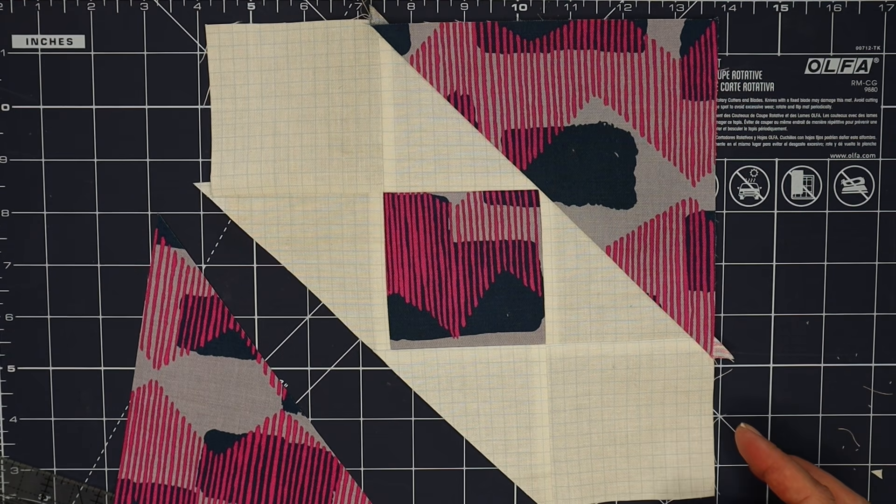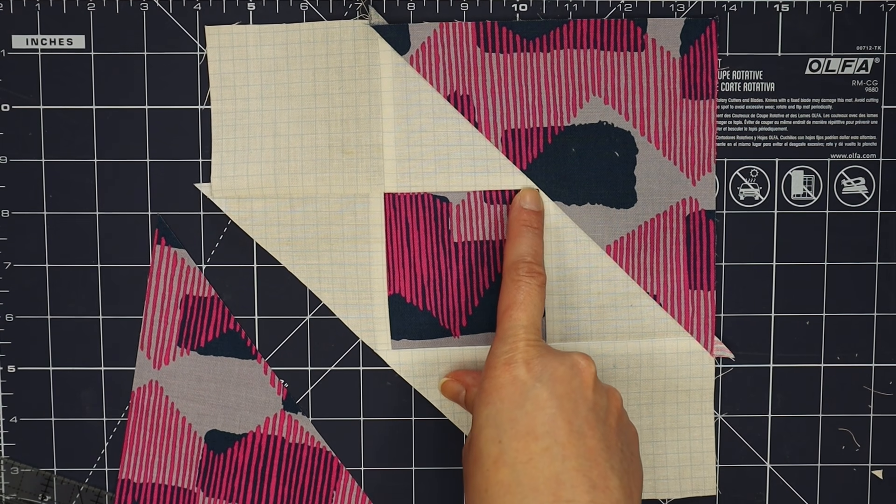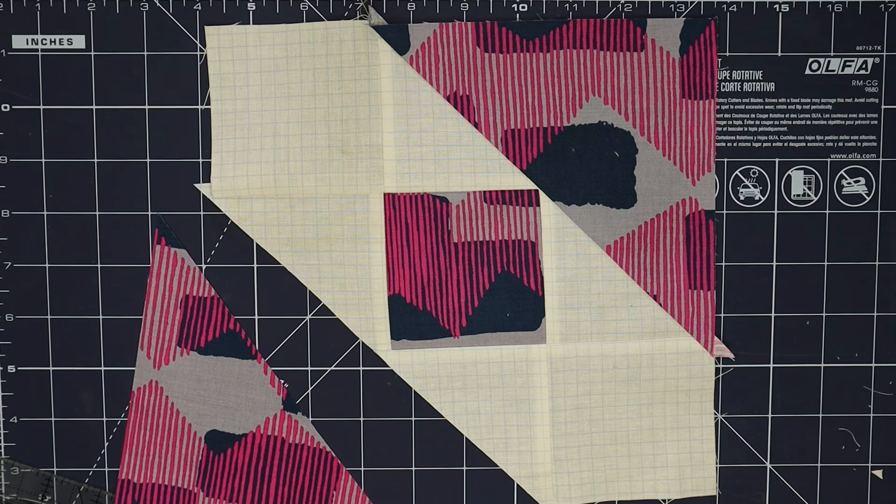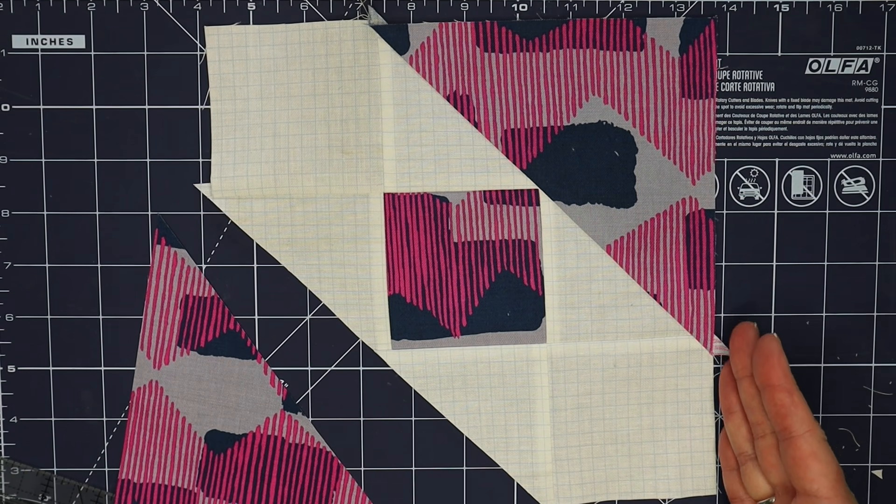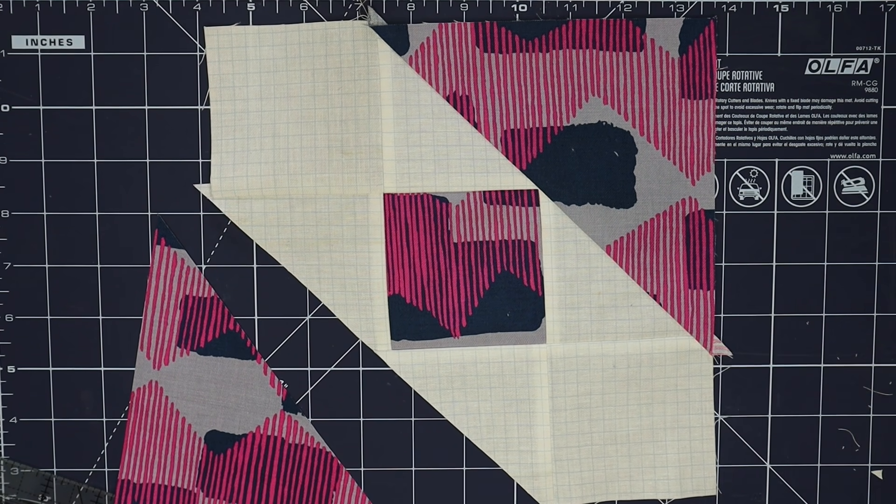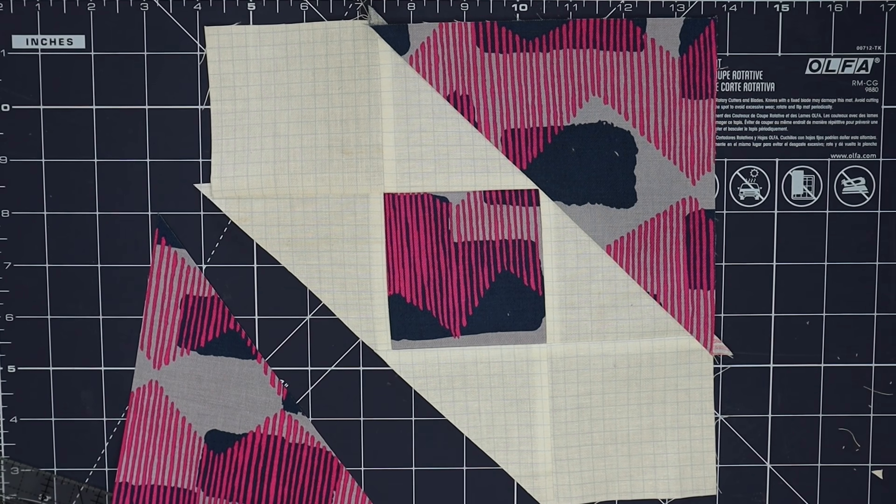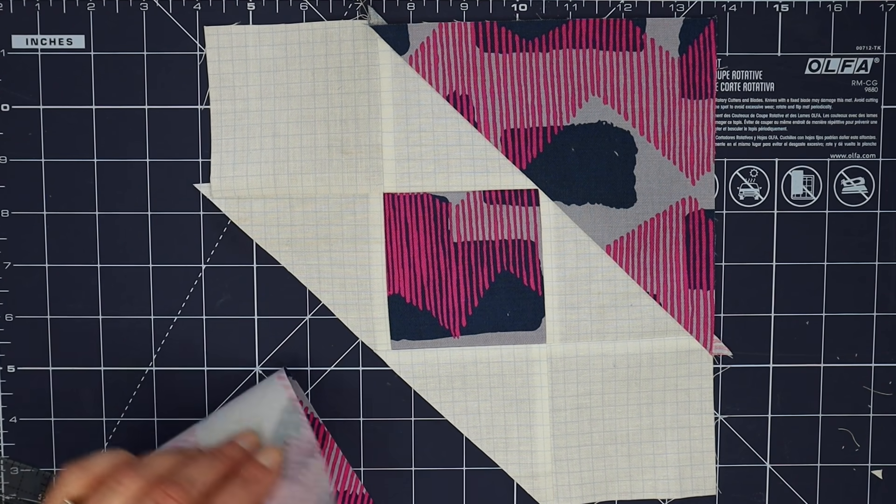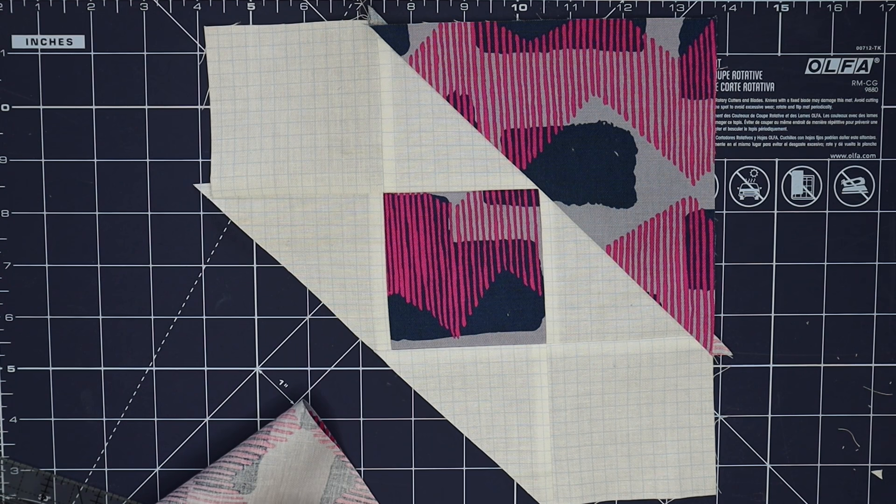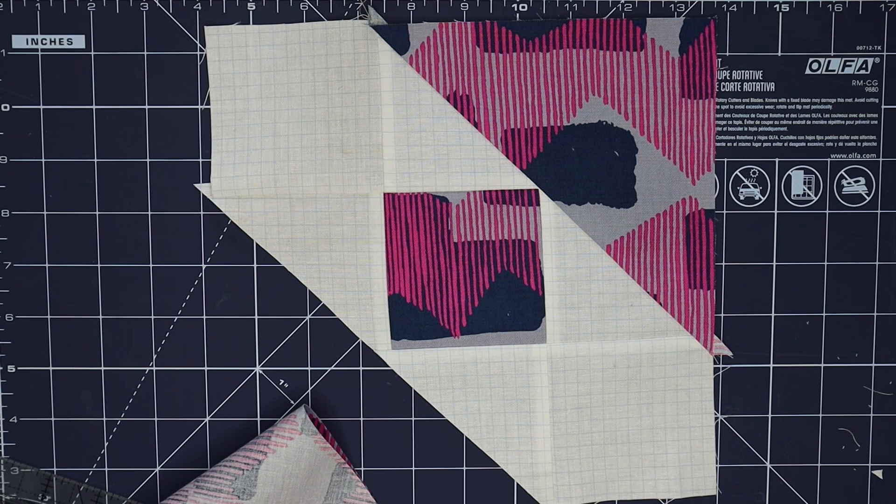Okay so that is looking good. I've got our point here not cut off and we're sewn all the way out to the edge of this square, so we're going to repeat and mark the center and then sew the opposite side.